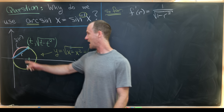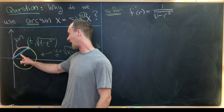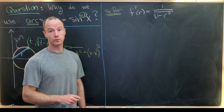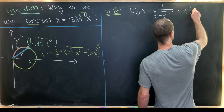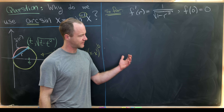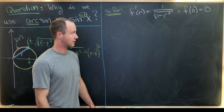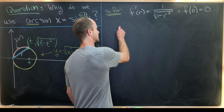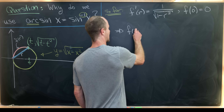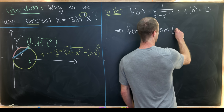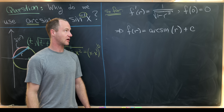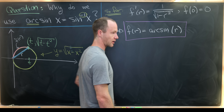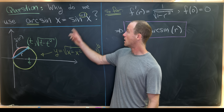So f(r) is the arc length as a function of distance r, and we've shown f′(r) = 1 / sqrt(1 - r²). We can also see easily that f(0) = 0, since a trivial arc has length 0. Taking the antiderivative of both sides — and 1/sqrt(1 - r²) is a well-known derivative — gives f(r) = arcsin(r) + C. The initial condition f(0) = 0 tells us C = 0, so f(r) = arcsin(r).